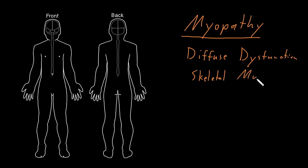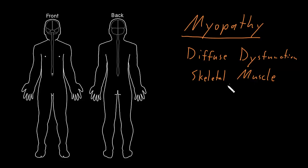Skeletal muscle is not actually part of the nervous system, so you may be wondering why we would cover syndromes of disorder of skeletal muscle with neurological syndromes. The reason for that is that the primary symptom we get with skeletal muscle dysfunction is weakness, which occurs more often from nervous system dysfunction. So we usually cover myopathy syndromes with neurological syndromes.